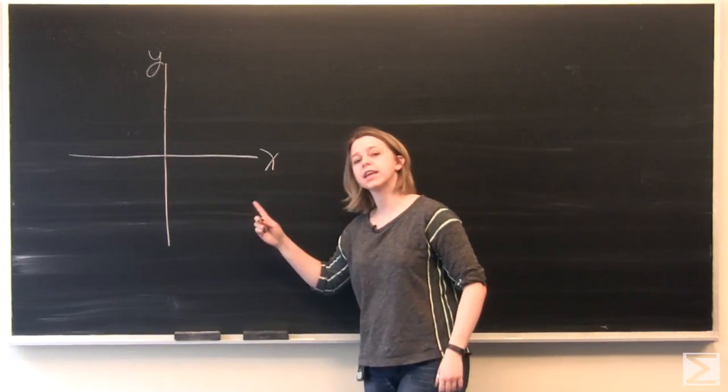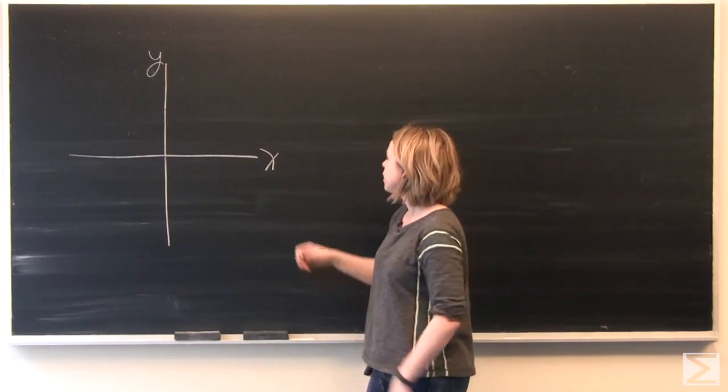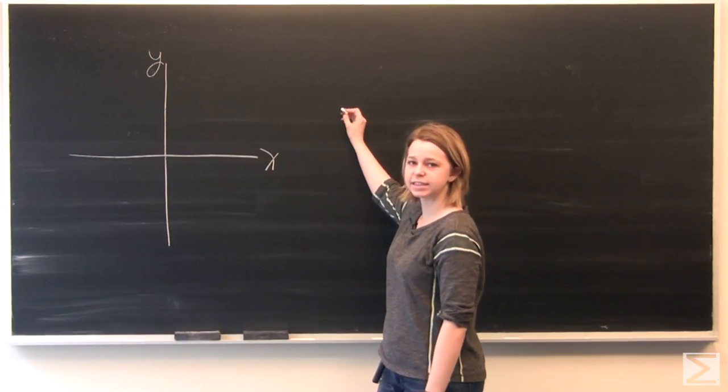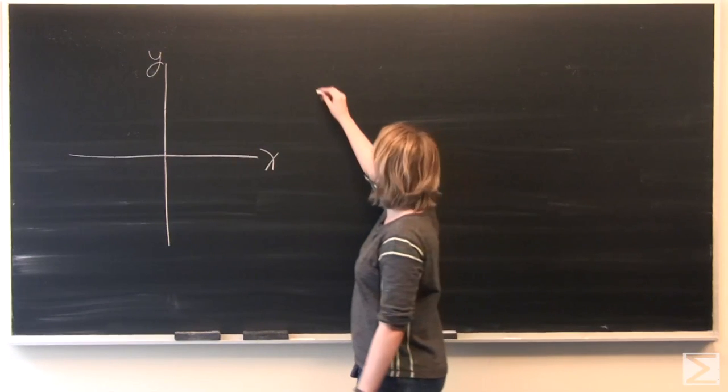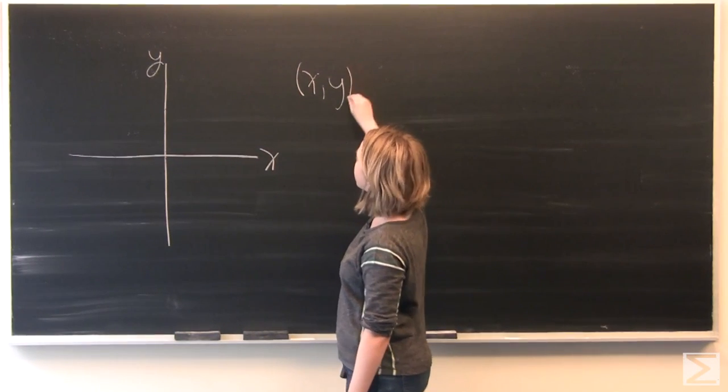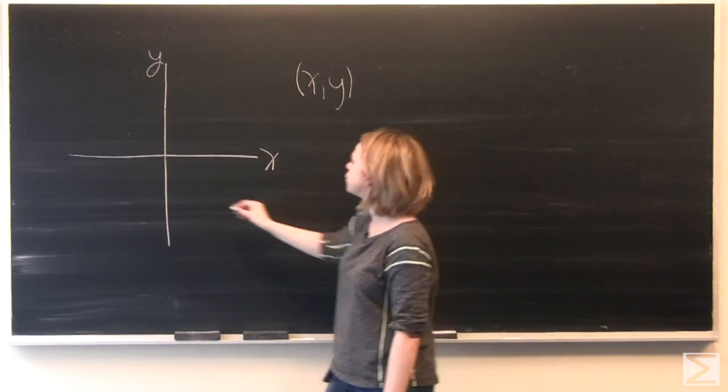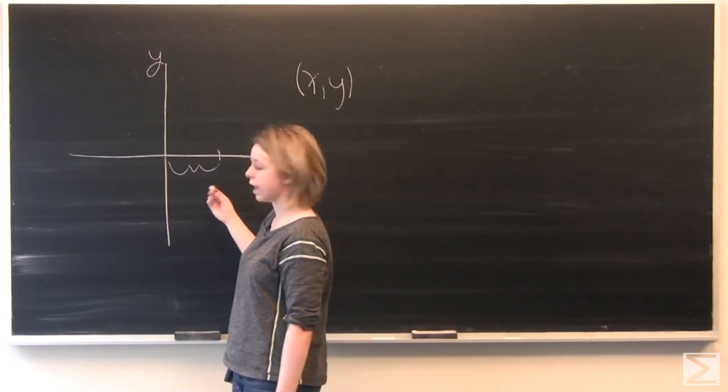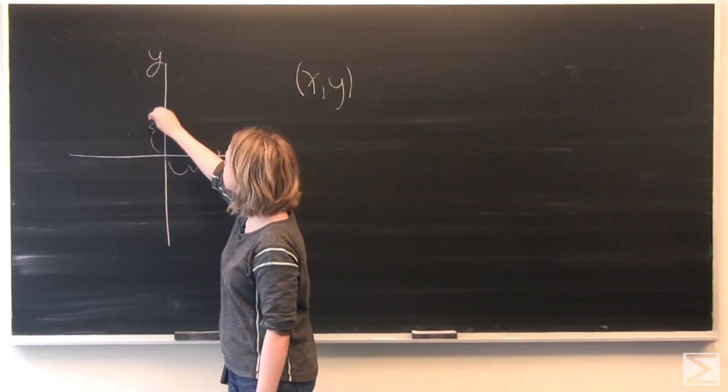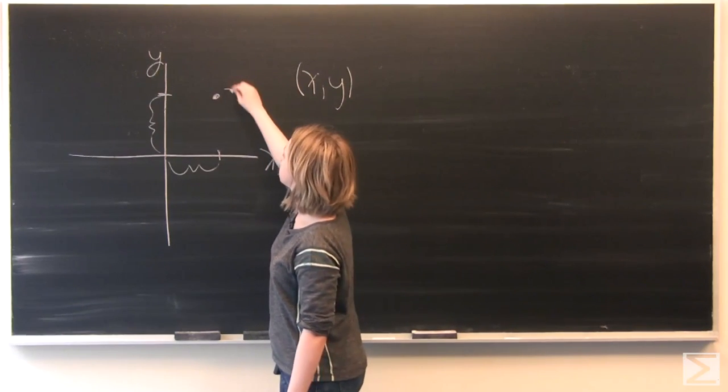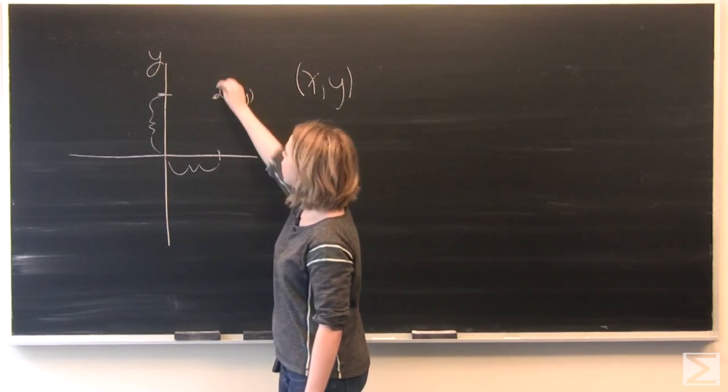What I have behind me is a Cartesian coordinate plane. This should look extremely familiar from algebra classes and everything you've done in mathematics. Your teacher would give you some XY point, and in order to graph it you move X units to the right or left and Y units up or down to get a point XY on your plane.